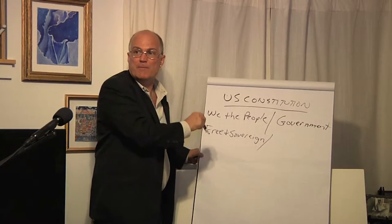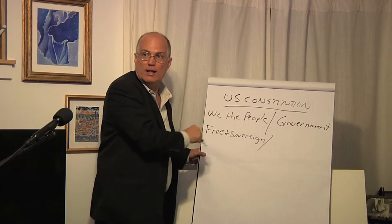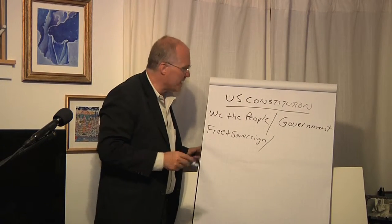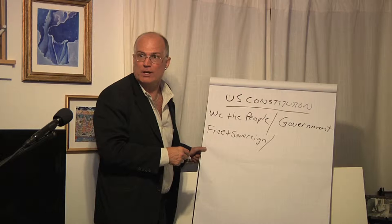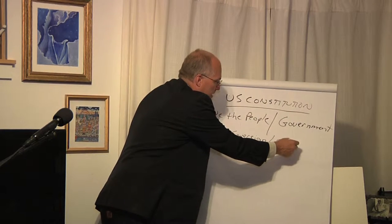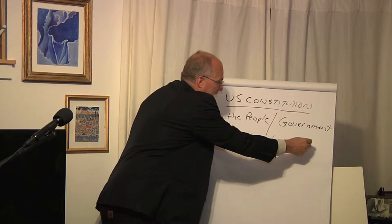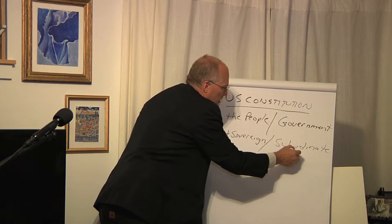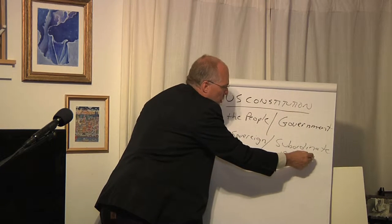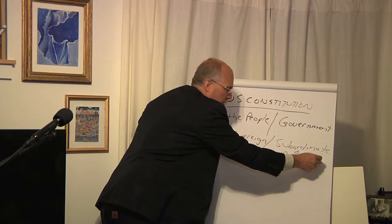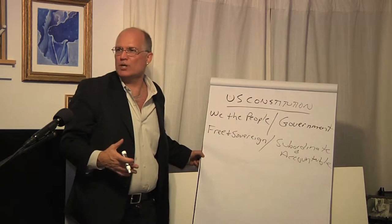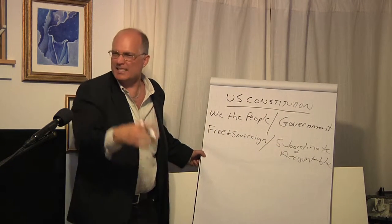We the people in the constitutional framework are claiming the authority to rule. Government, by the way, is not sovereign. In fact, government is subordinate and accountable. Government is subordinate to whom? The people. Government is accountable to whom? The people.